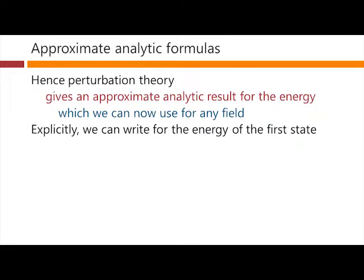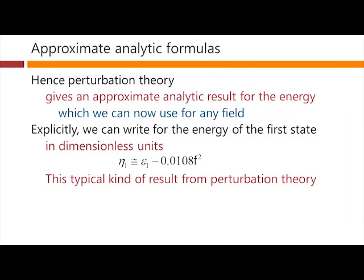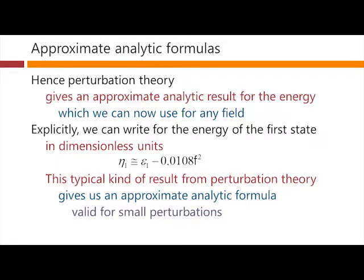Explicitly, we can write the energy for the first state in this approximation in our dimensionless units as this energy, η_1, is equal to approximately the original unperturbed energy eigenvalue minus 0.108f squared. That's the number we get from just summing up the formula in the previous viewgraph. This typical kind of result of perturbation theory gives us, as we said, an approximate analytic formula now. And this is valid, presumably, for small perturbations.